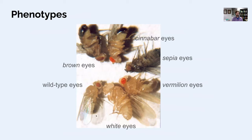Looking at what these look like visually: cinnabar and vermilion are very similar — both bright red eye color — but they're mutants at different genes, which will be important later. The brown and sepia mutants both give brown eyes even though they have mutations in different genes. For comparison, the wild type is sort of brick red, brown red, or dull red. And then white is just sort of clear — really truly white-eyed.